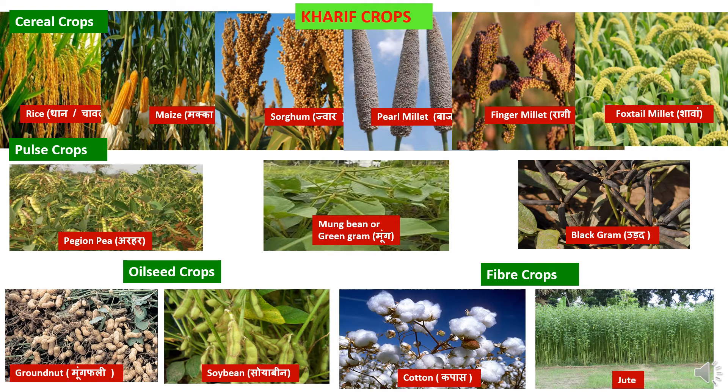The crops grown in Kharif season include cereals such as rice, maize, sorghum, pearl millet, finger millet, and foxtail millet cultivated on larger scales. Under pulse crops, pigeon pea, mung bean or green gram, and black gram are cultivated during Kharif season. Under oilseeds, groundnut and soybean are grown, and in fiber crops, cotton and jute are cultivated.